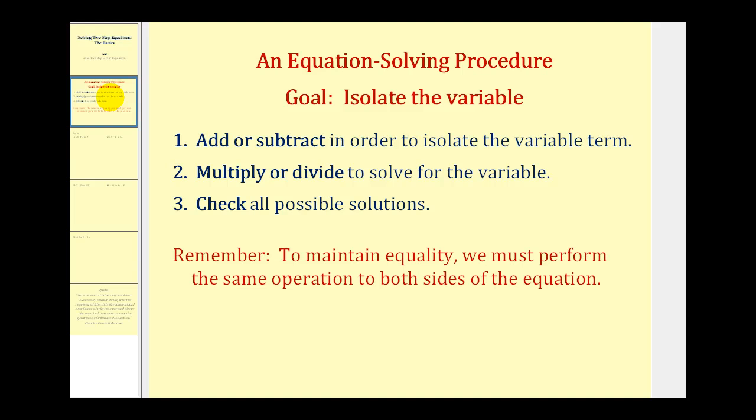Step two is going to be to multiply or divide to solve for the variable. In step three, we should check all possible solutions. Remember, to maintain equality, we must perform the same operation on both sides of the equation. Let's take a look at our examples.